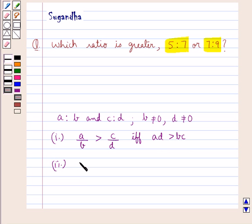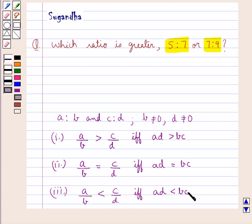Also, A upon B would be equal to C upon D if and only if AD is equal to BC, and A upon B would be less than C upon D if and only if AD is less than BC. This is the key idea that we use for this question.